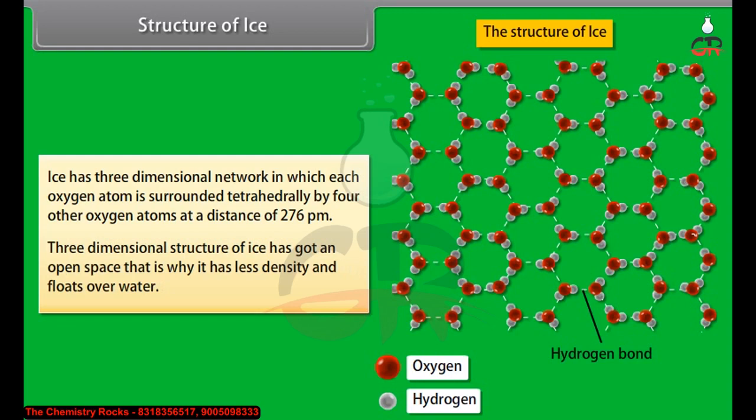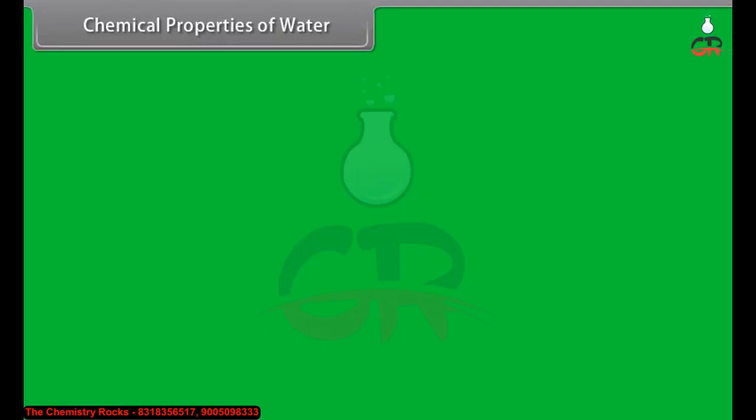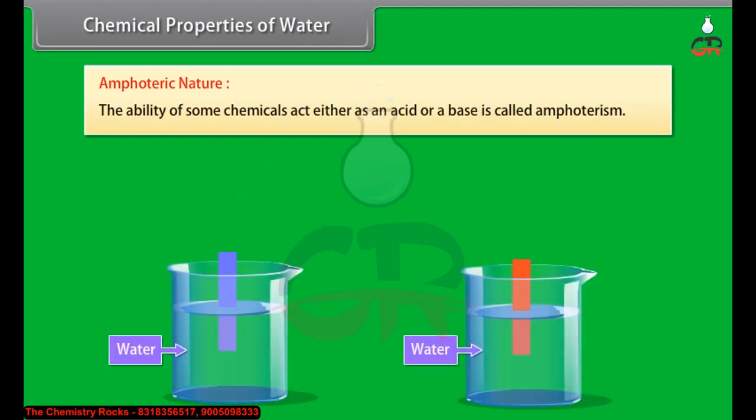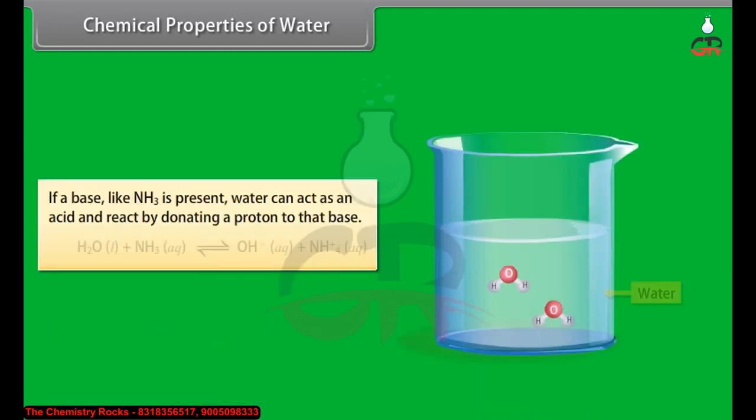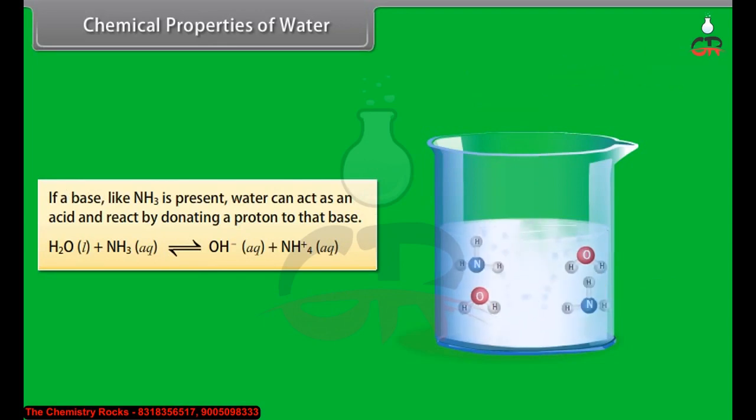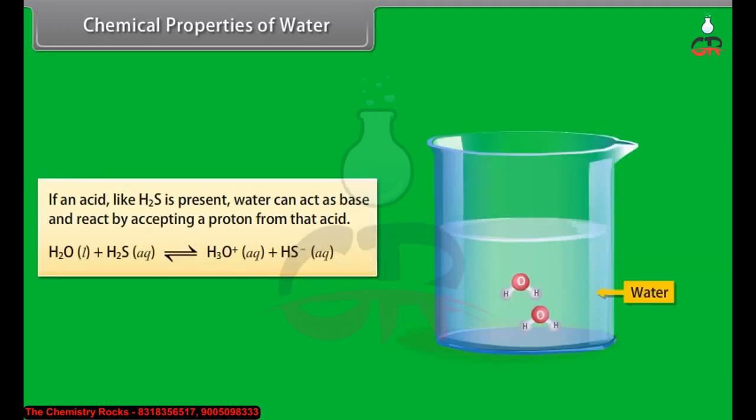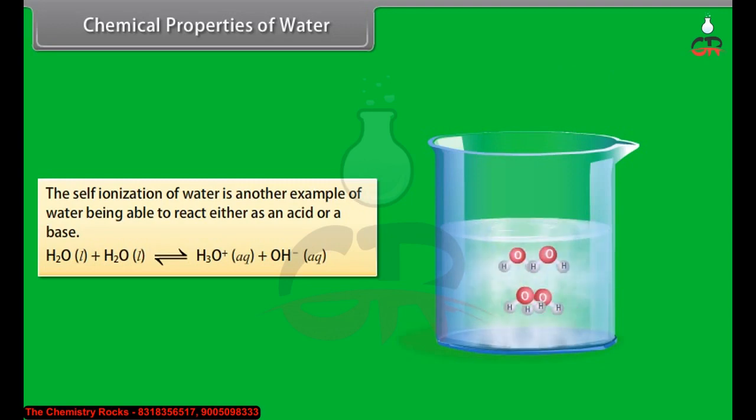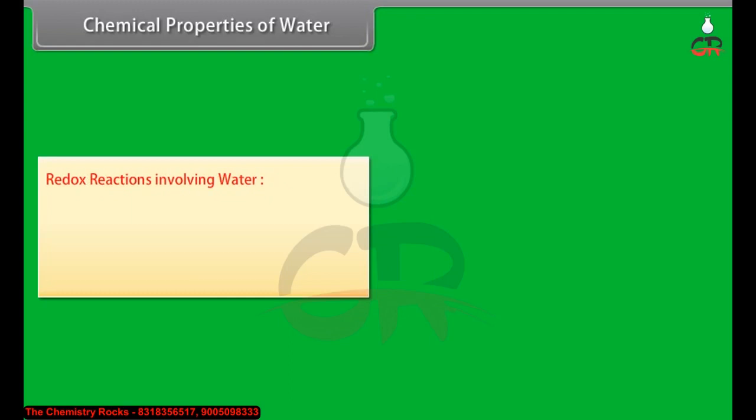Chemical properties of water: Amphoteric nature - the ability of some chemicals to act either as an acid or a base is called amphotericism. If a base like NH3 is present, water can act as an acid and react by donating a proton to that base. The self-ionization of water is another example of water being able to react either as an acid or a base.